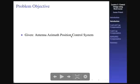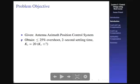So this antenna motor position control system is what we're talking about for a problem objective. And for today, once we're finished with this lecture, we should be able to see how we could design the system so that it would have less than or equal to a 25 percent overshoot, a two-second settling time.